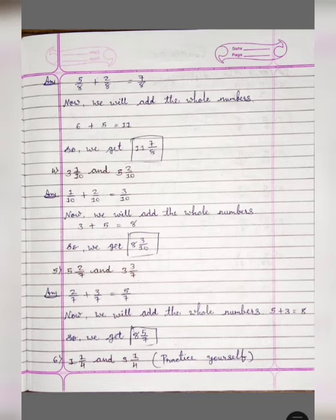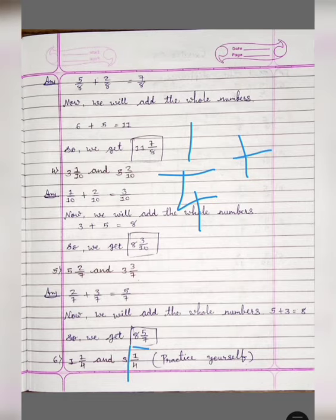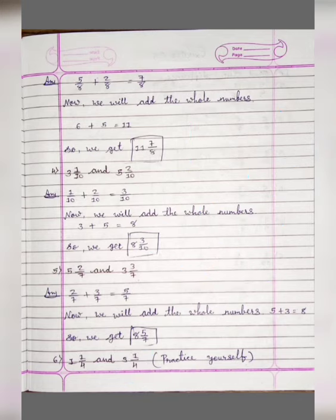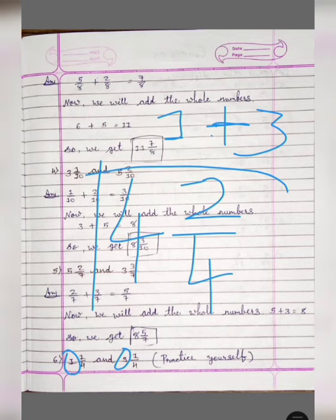In the same way, numbers 4, 5, and 6 — you have to practice yourself, it is very easy. Otherwise you can see the answer here. For number 6: 1 upon 4 plus 1 upon 4 is equal to 2 upon 4. Now add the whole numbers: 1 plus 3 is equal to 4. So we have the answer 4 and 2 upon 4.